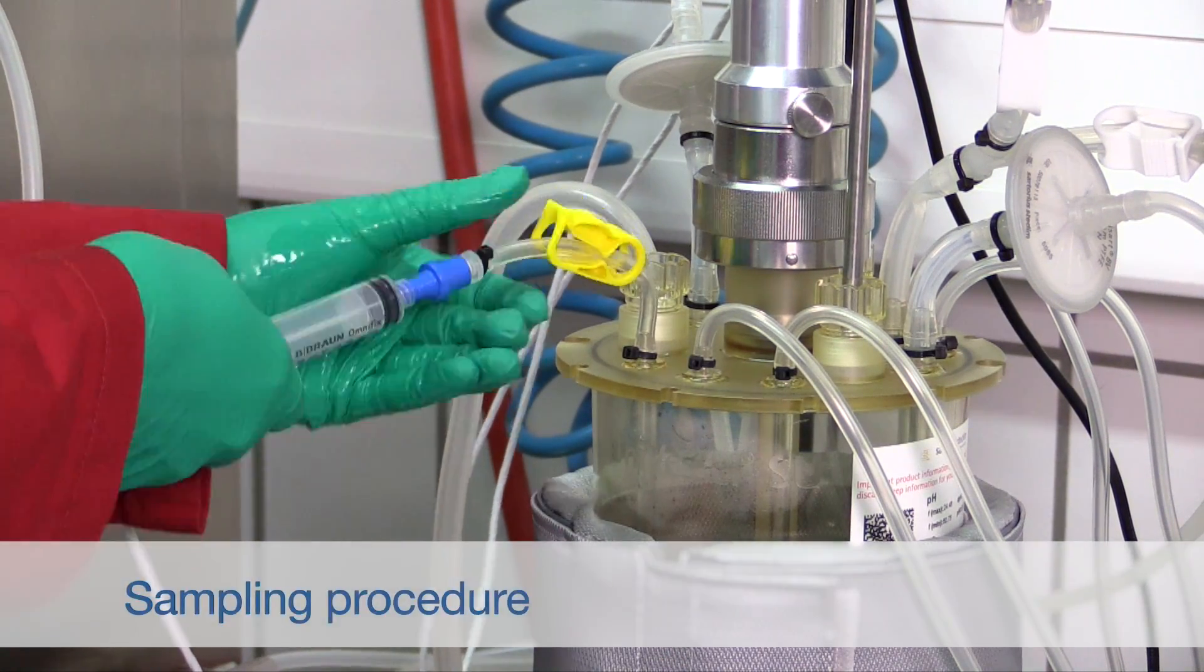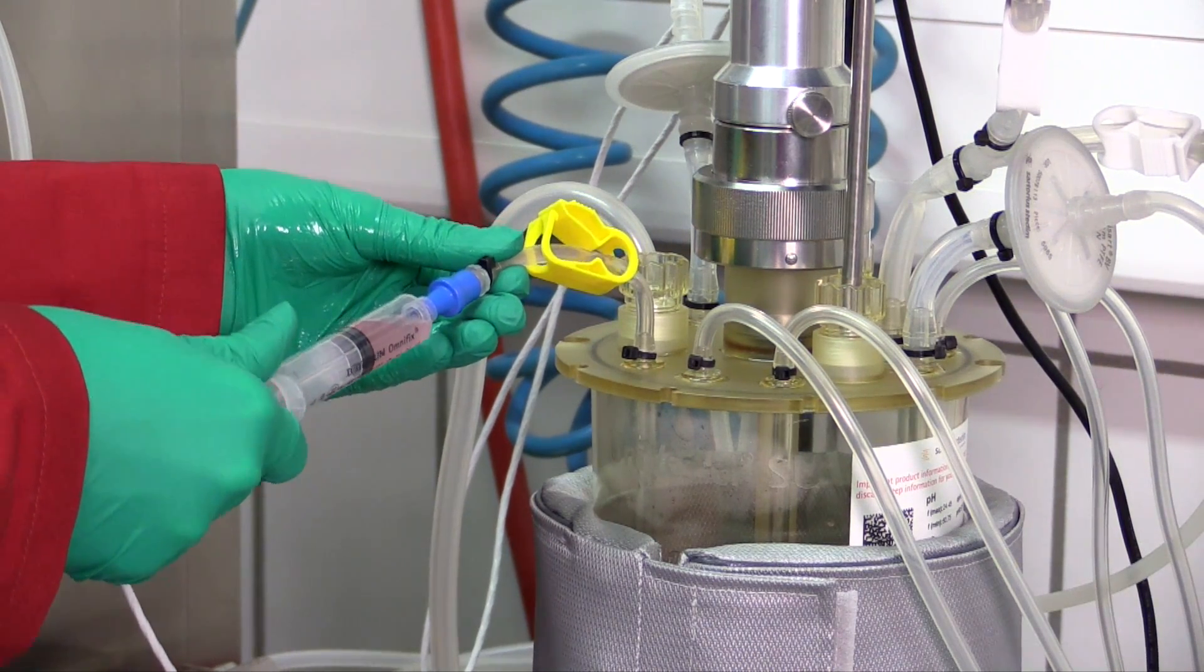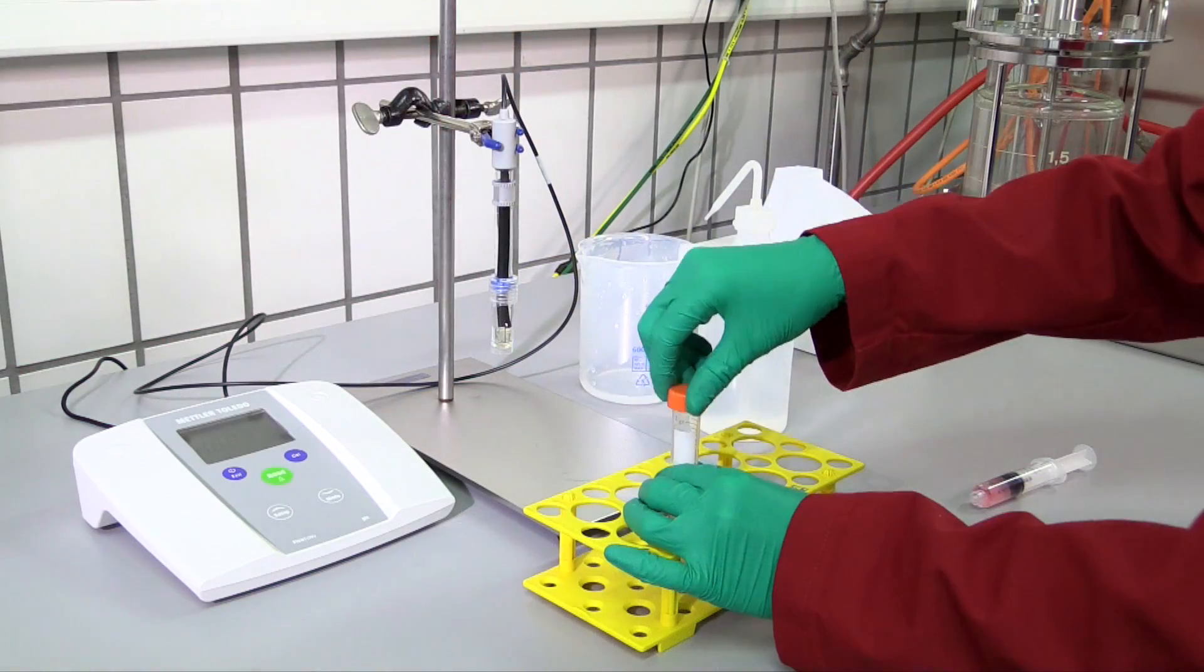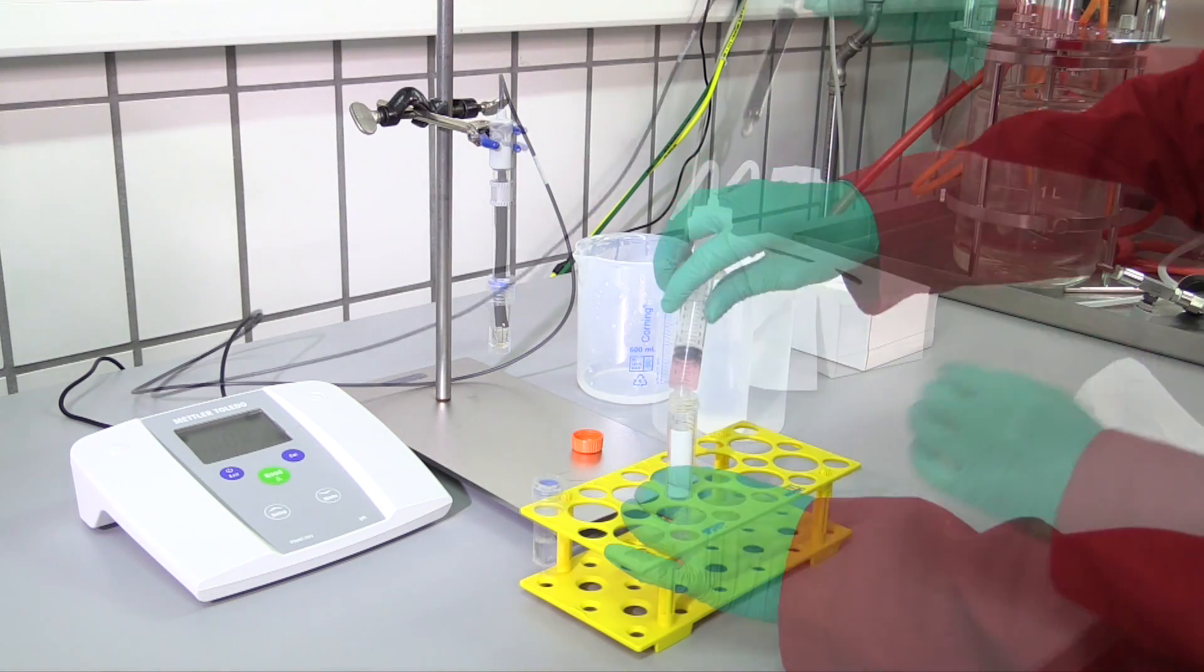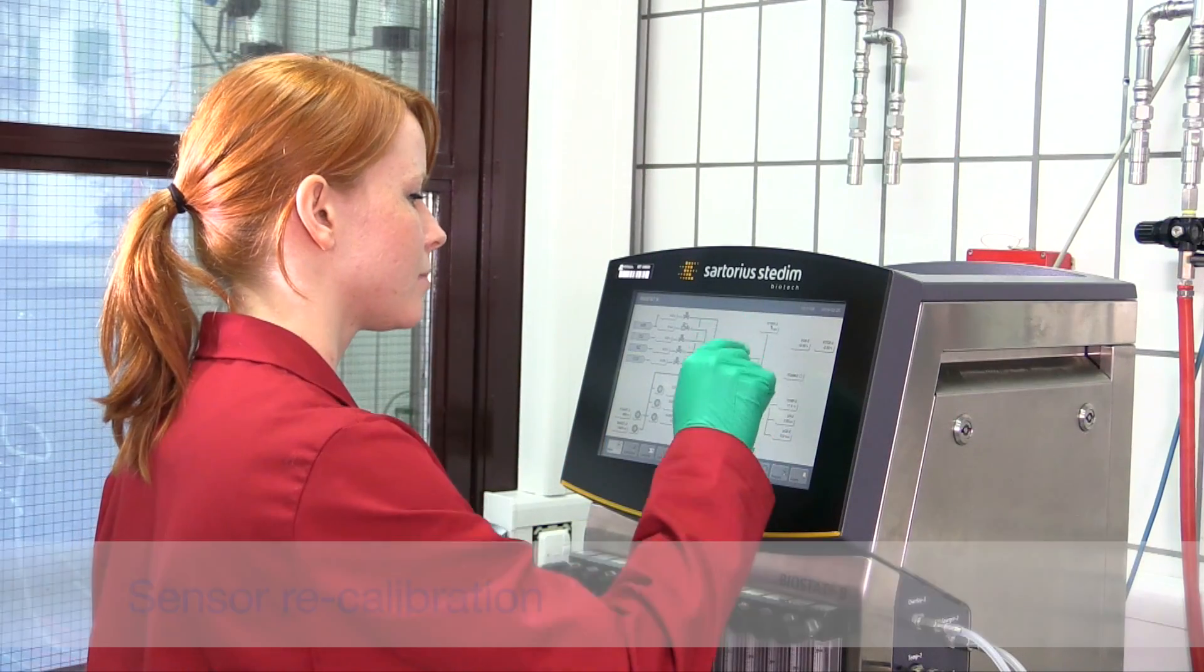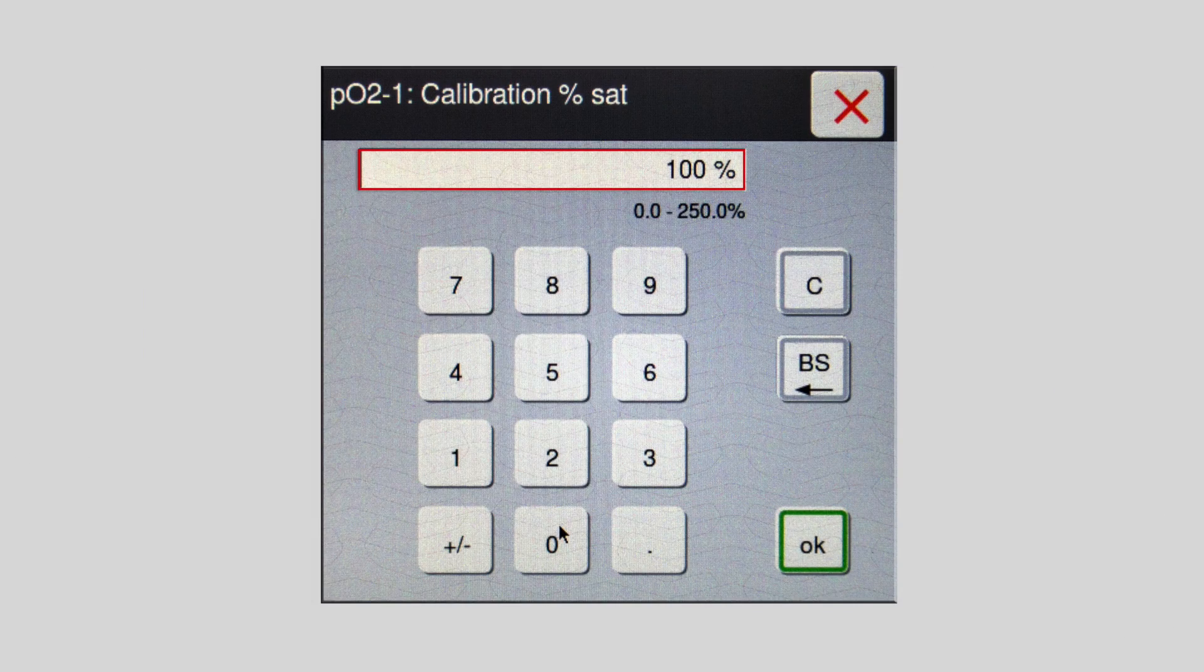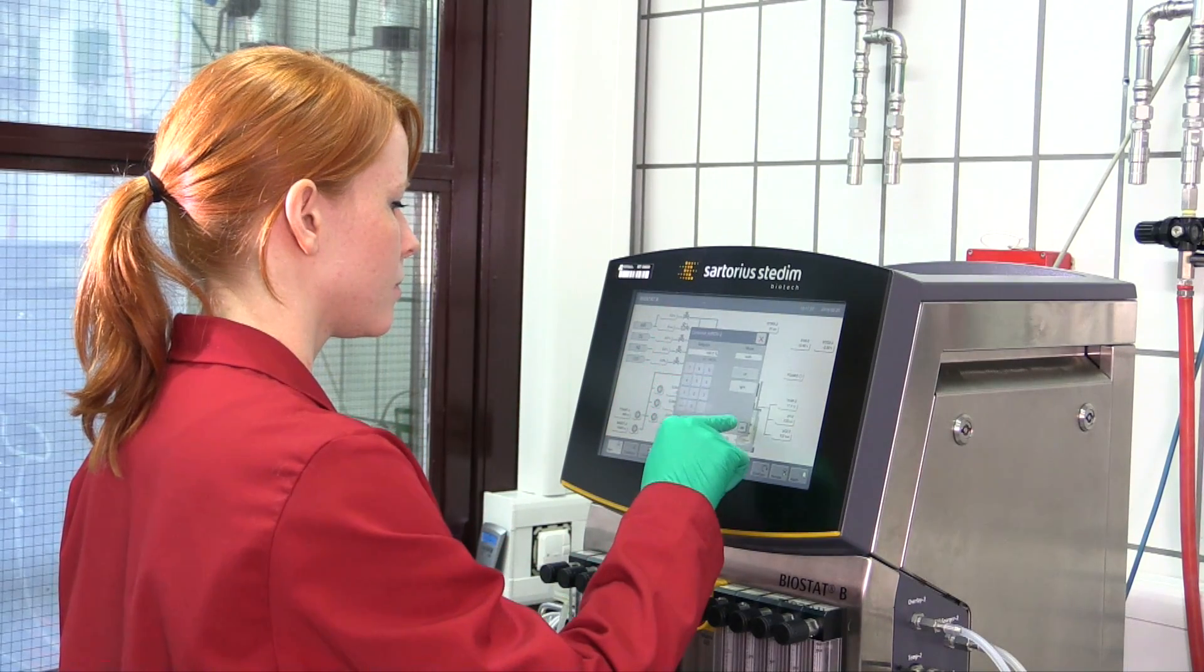This is followed by recalibration to ensure that the values have been correctly measured. To calibrate the pH, a sample of the medium is taken with a sterile syringe through the sample port. The pH is measured with an offline pH meter. The value obtained is then entered into the control unit. For dissolved oxygen calibration, the value is set to 100% saturation as soon as the medium is completely saturated. The pH regulation can then be switched to a set point of 7.2.